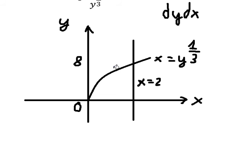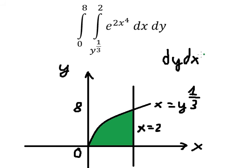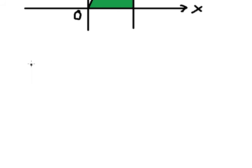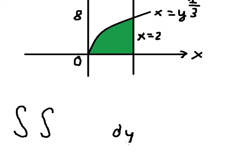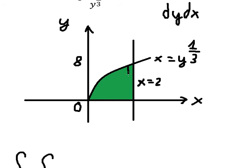The region we need to concentrate on is this one. Because we are changing to dy dx, we need to create new bounds. For dy dx, the level is here. We have x equals y to the power of 1/3, so we raise both sides to the power of 3 and get x cubed equals y.